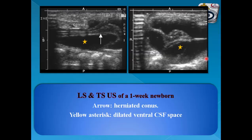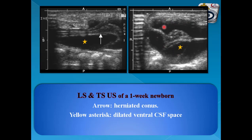Another example on LS and TS ultrasound of a one-week newborn: this is the herniated conus and this is the dilated ventral CSF space, also visible on the TS image.